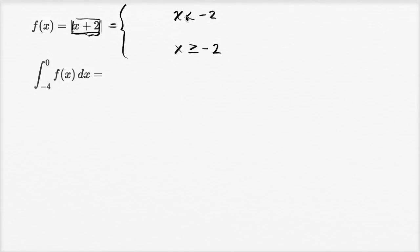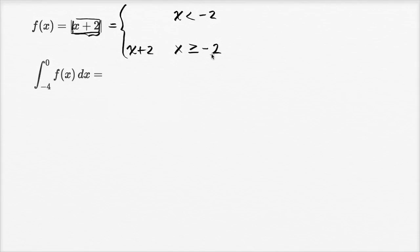This could have been less than or equal, in which case this would have been greater than — either way it would be equal to this absolute value. This is a continuous function. When x is greater than or equal to negative two, then x plus two is going to be positive, or greater than or equal to zero. And so the absolute value of it is just going to be x plus two — so it's x plus two when x is greater than or equal to negative two.